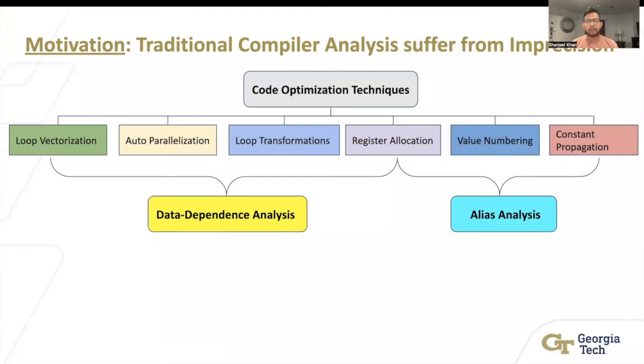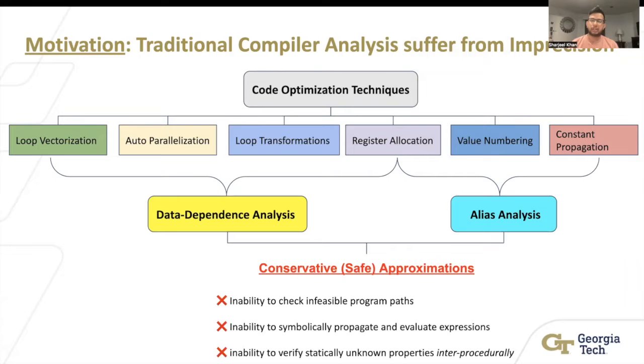However, these compiler analyses suffer from imprecision. As a result, they have to use conservative approximations to be safe. These imprecisions happen due to the inability to check infeasible program paths, inability to symbolically propagate and evaluate expressions.